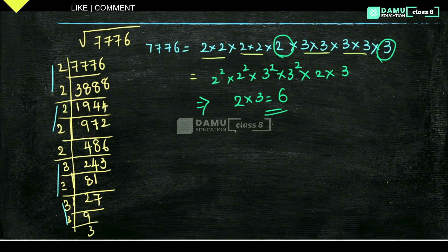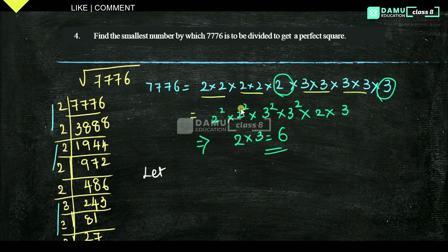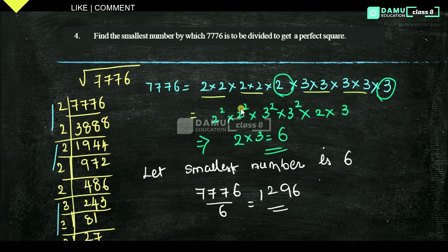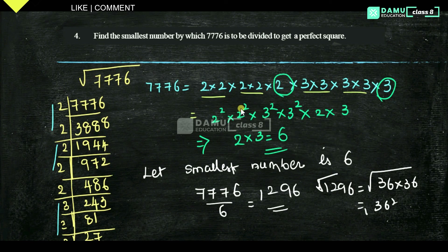So divide 7,776 by 6 and you get 1,296. Then taking the square root of 1,296: that equals 36 × 36, which is 36 whole squared. The square and square root cancel, giving 36. Yes, 1,296 is a perfect square with square root 36.